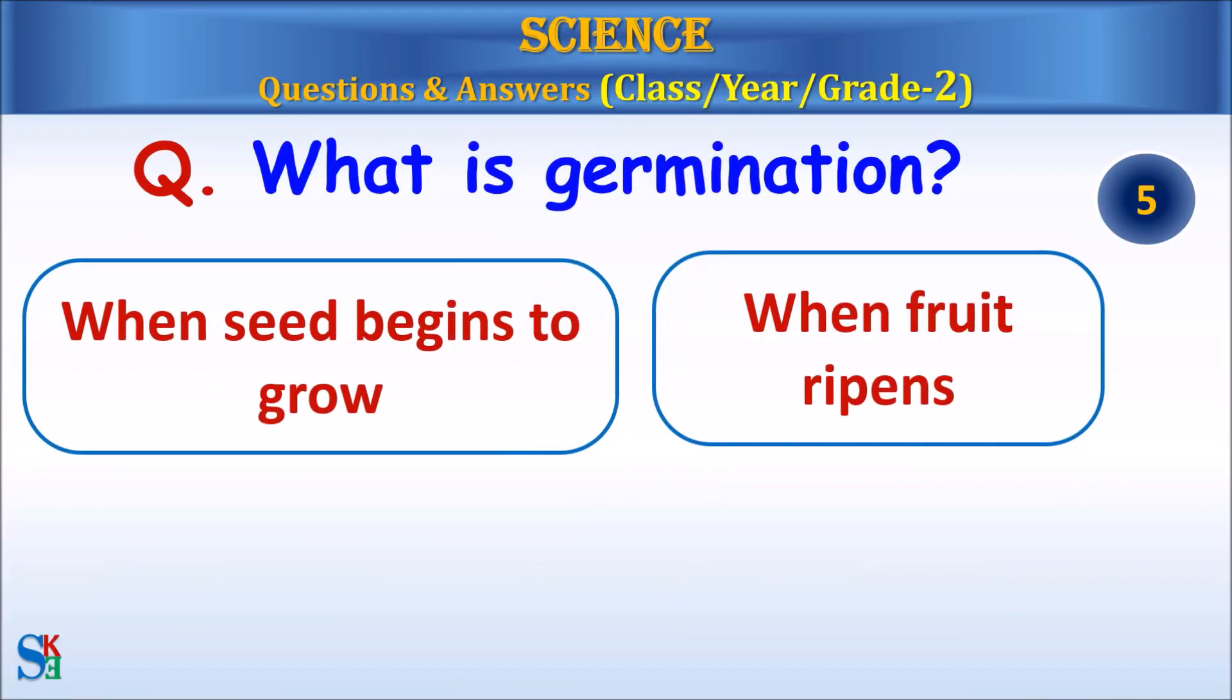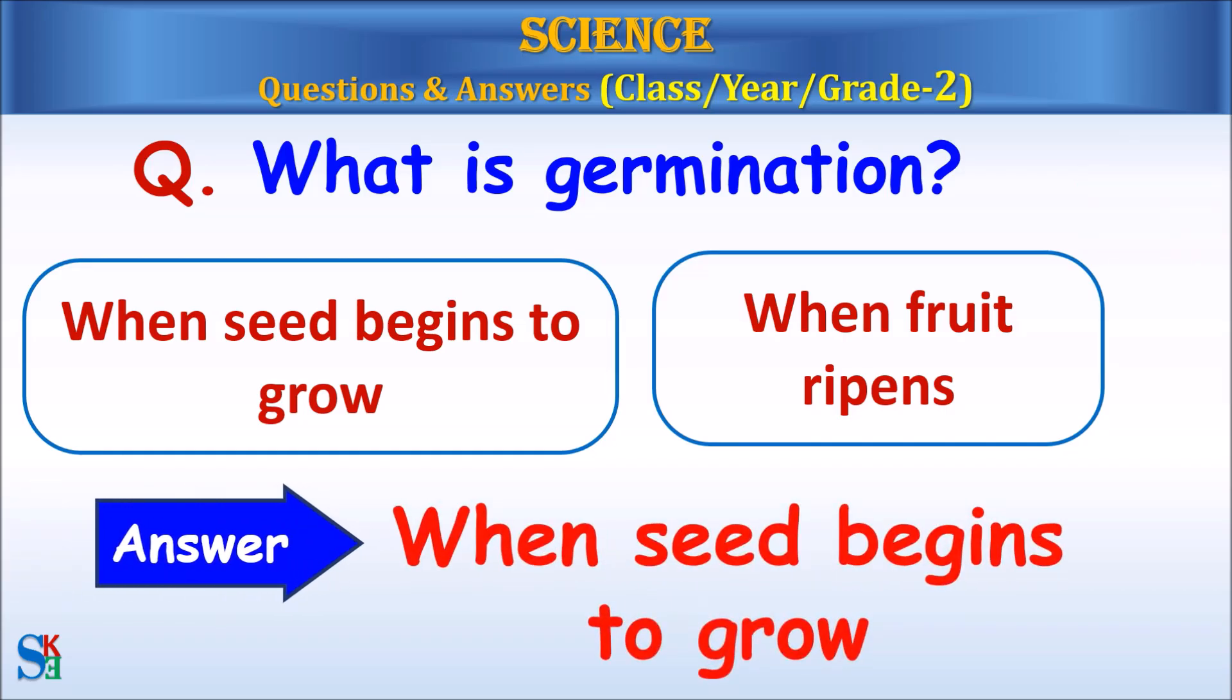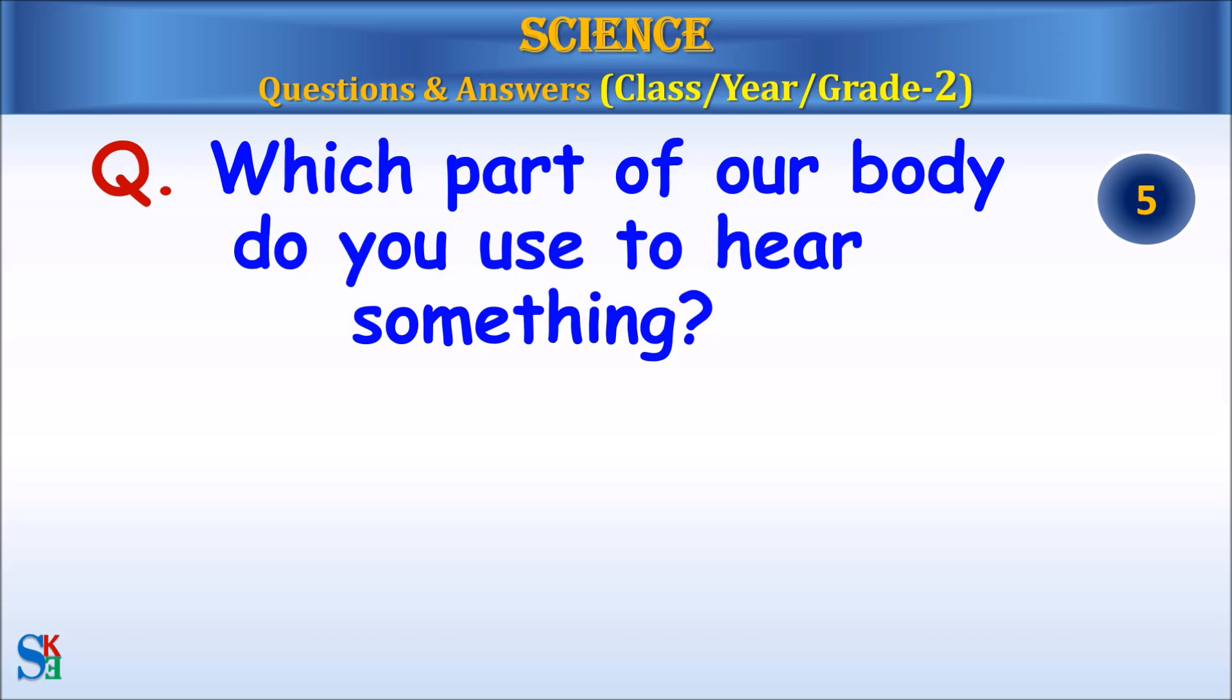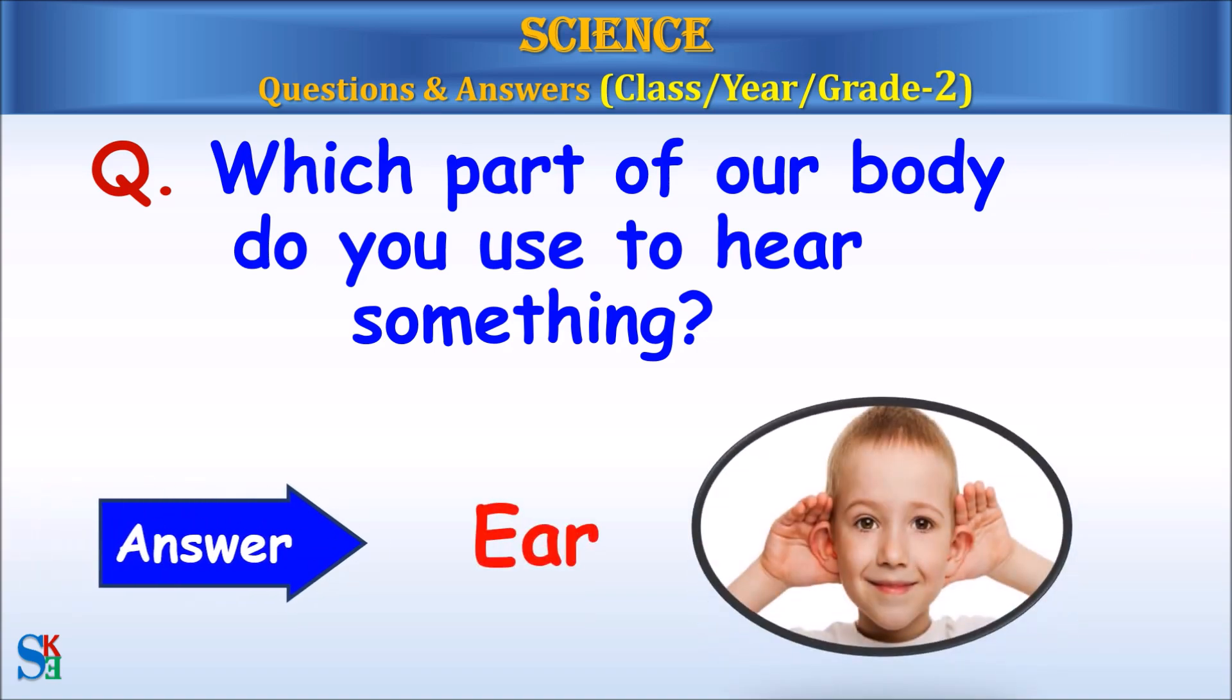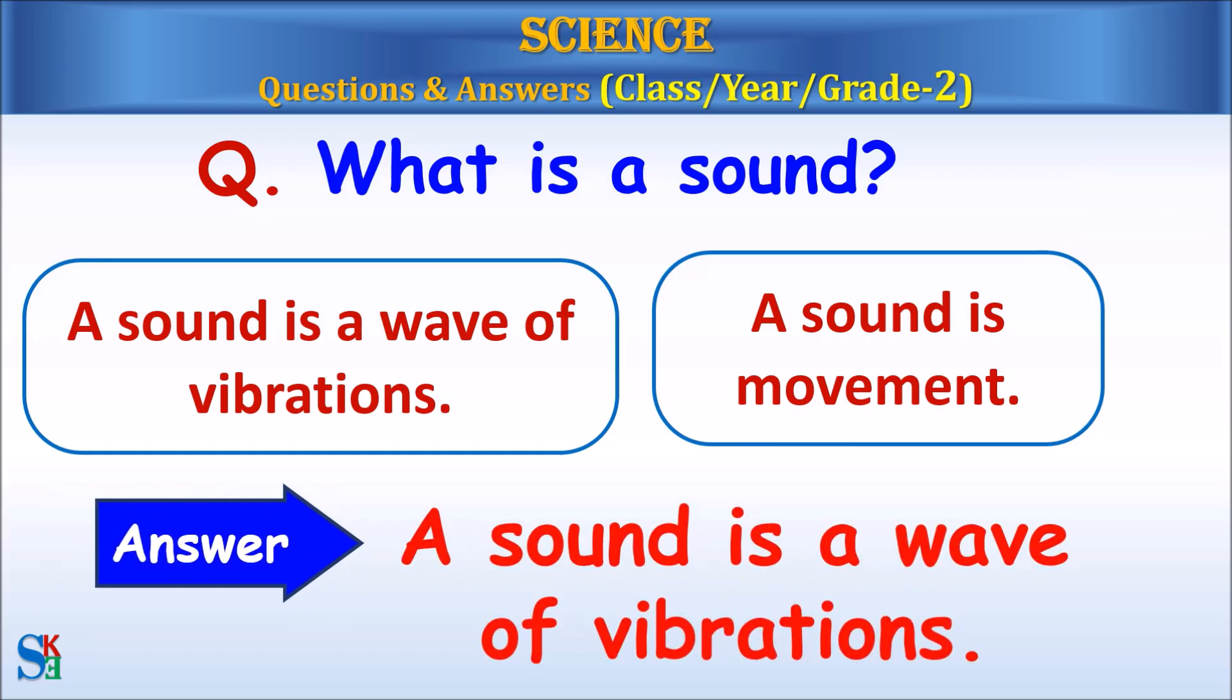What is germination? When seeds begin to grow or when fruit ripens? Answer, when seed begins to grow. Which part of our body do you use to hear something? Answer, ear. What is a sound? A sound is a wave of vibrations or a sound is movement? Answer, a sound is a wave of vibrations.